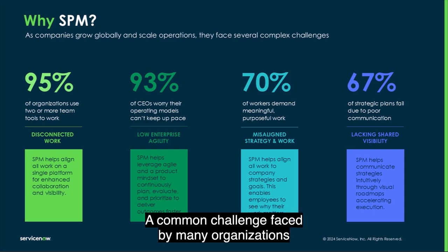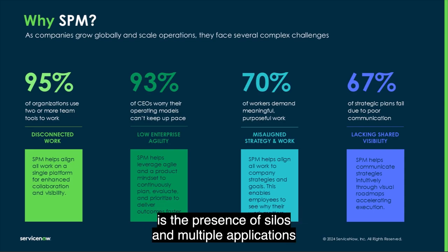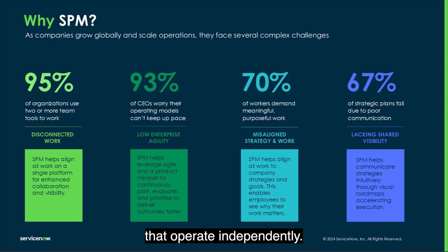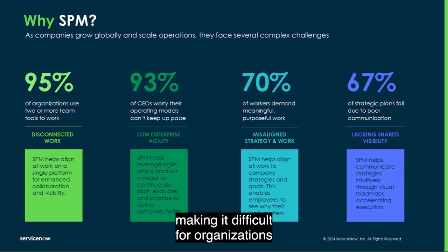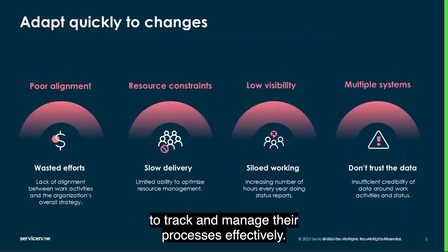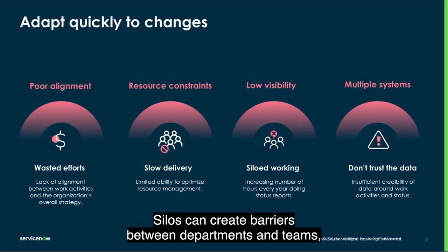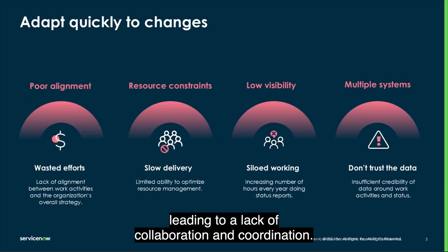A common challenge faced by many organizations is the presence of silos and multiple applications that operate independently. This results in a lack of end-to-end flow and visibility, making it difficult for organizations to track and manage their processes effectively. Silos can create barriers between departments and teams, leading to a lack of collaboration and coordination.